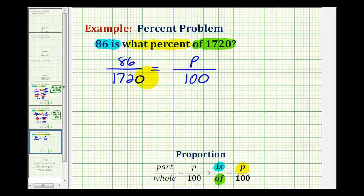So now we'll have 1720p must equal 86 times 100. So 1720p is equal to 8,600, and now we'll divide by 1720 on both sides.